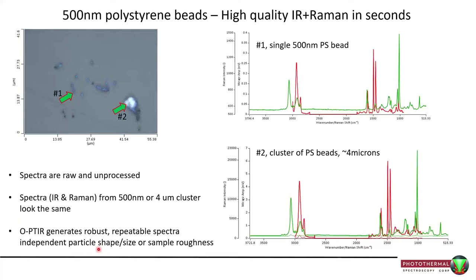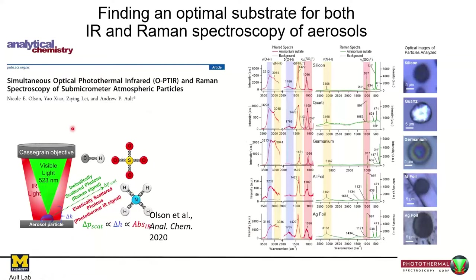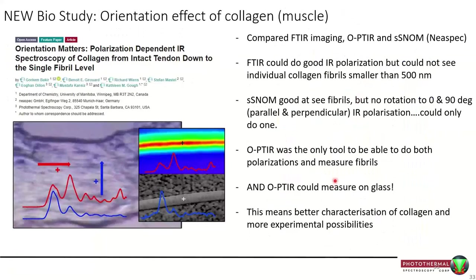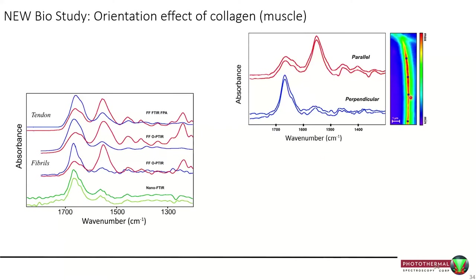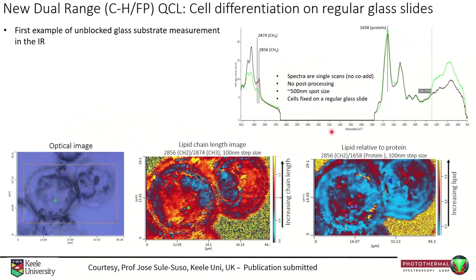A study from Andy Ault's group in Michigan looked at atmospheric particles using both infrared and Raman. Kathy Goff from the University of Manitoba in Canada looked at collagen orientation again, taking advantage of the inherent polarized nature of QCLs and rotating the polarisation. These are half-wave-plate collagen fibrils where amide II to amide I ratios change quite effectively depending on the polarisation orientation.